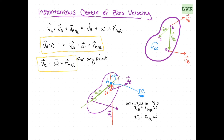Once we know our instantaneous center and can calculate our distances from it, we can find the velocities of any point on our object. It's important to note that the instantaneous center is valid only for that instant in time, so it will be changing over time as the object moves. Our procedure is to draw lines from our points perpendicular to our velocities, and where they meet is our instantaneous center.